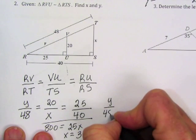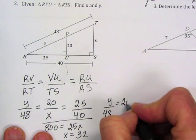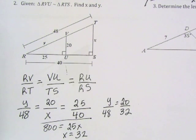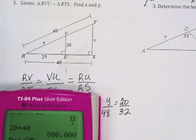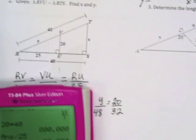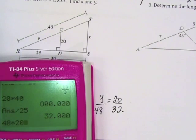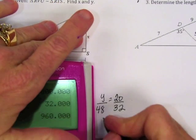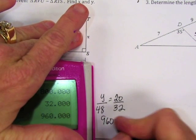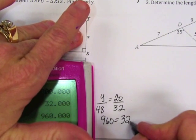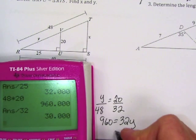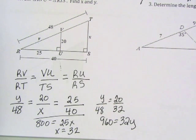And again, I am going to cross-multiply. So I am going to have 48 times 20, and that's 960 equals 32y. 960 divided by 32 is 30, and so y equals 30.